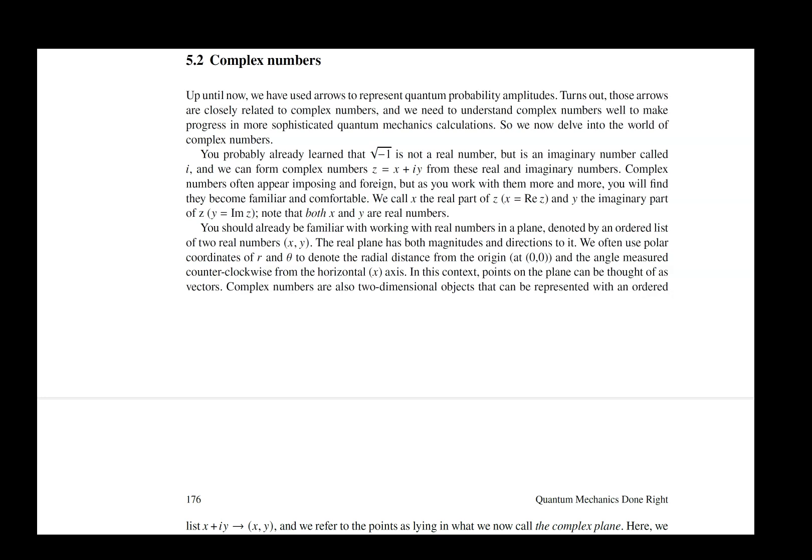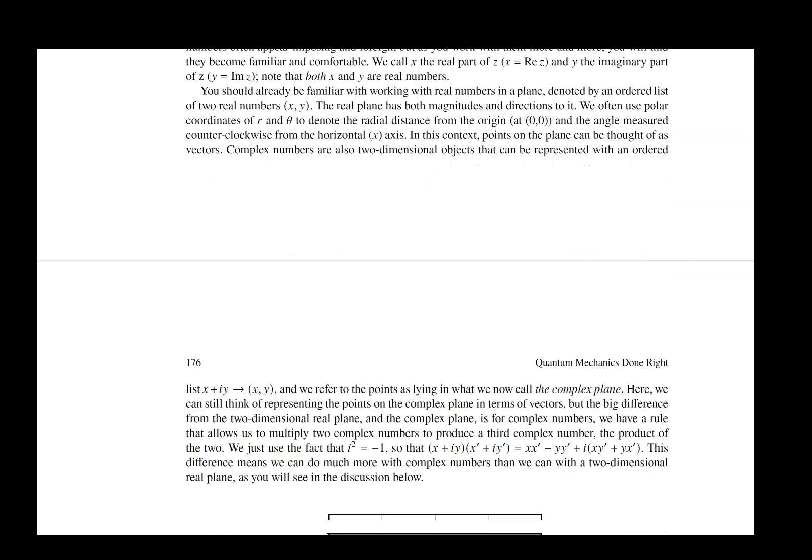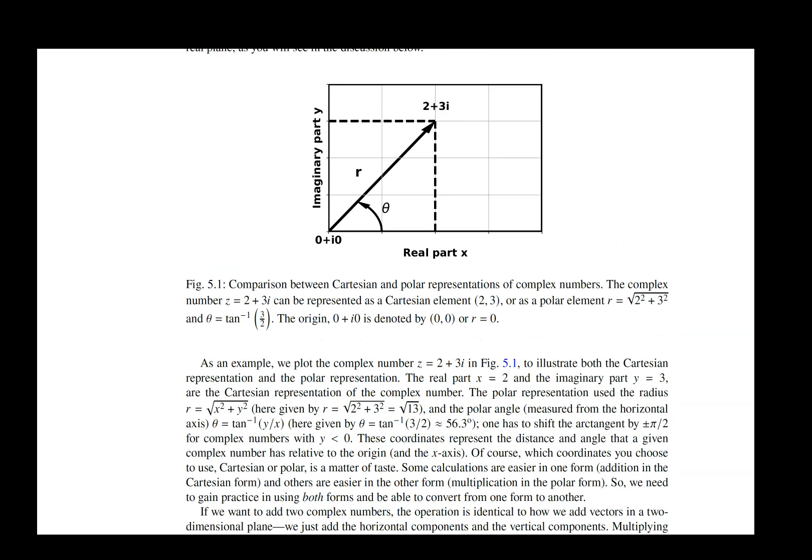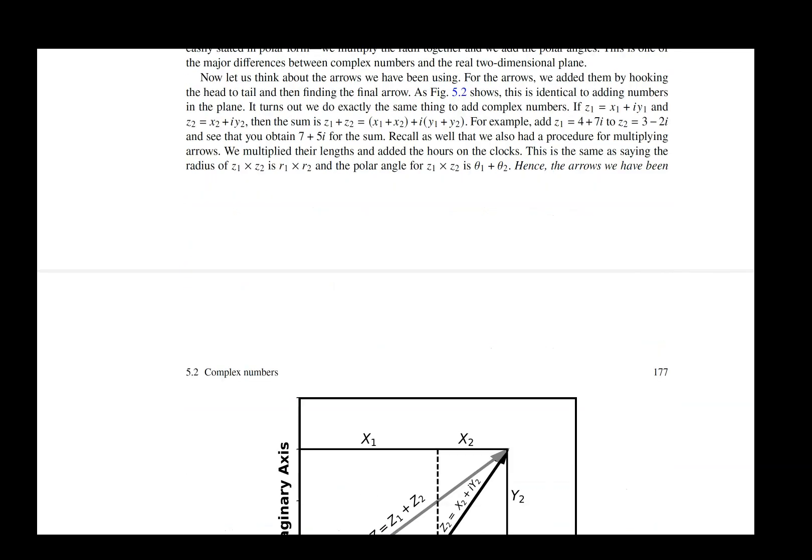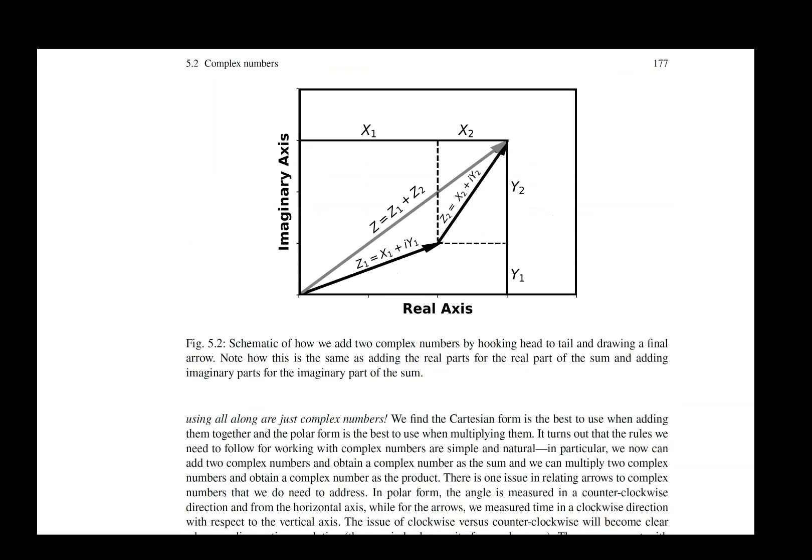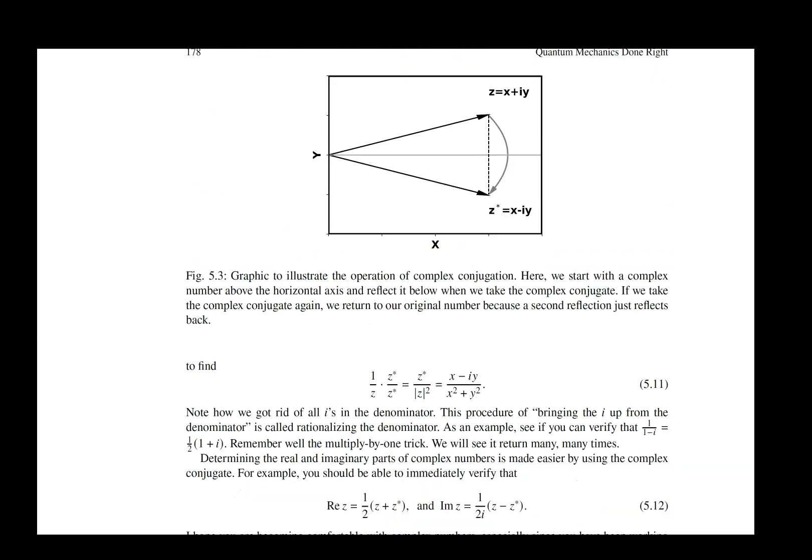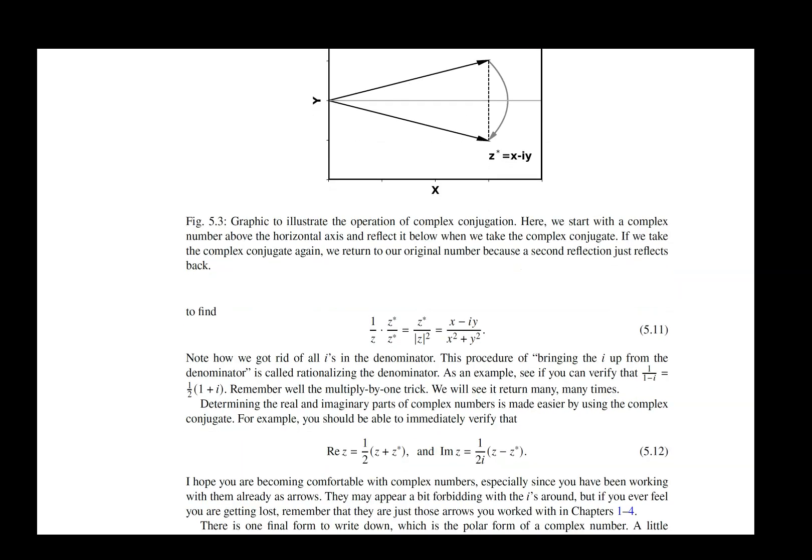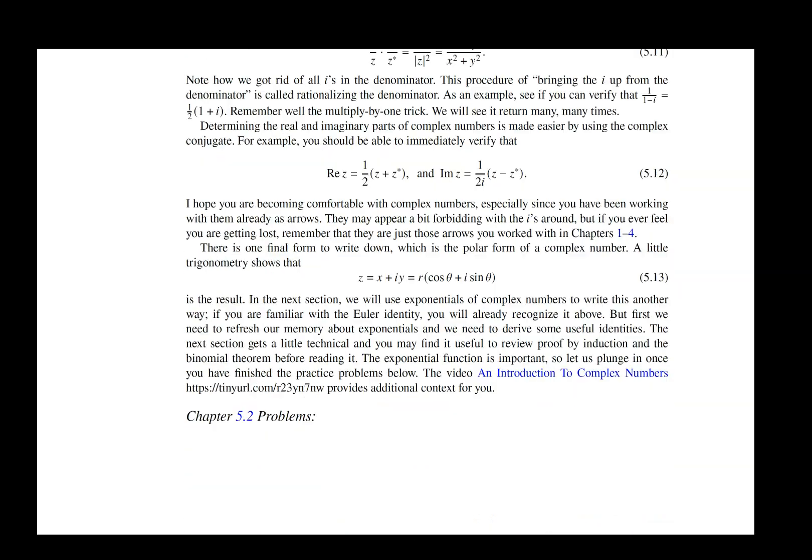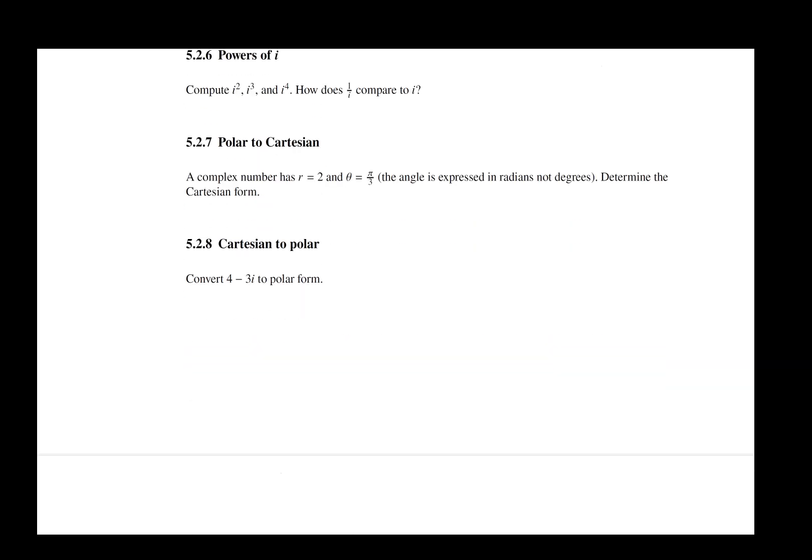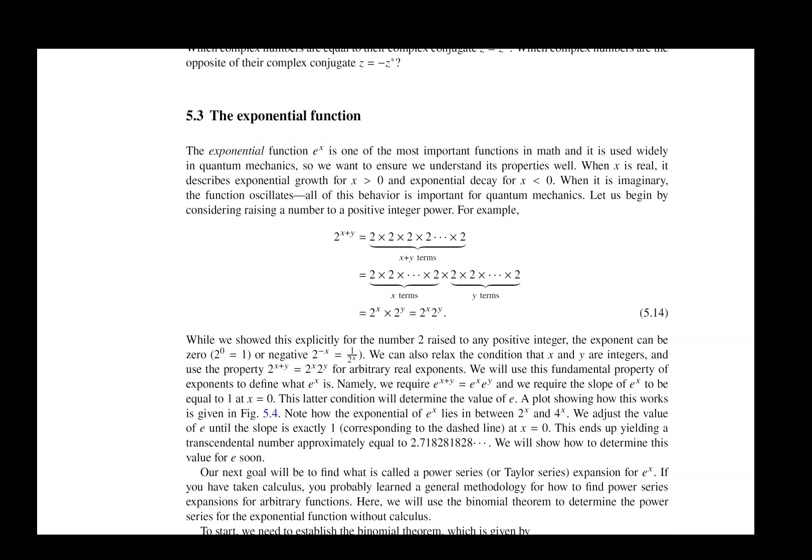Then we move on to complex numbers. Complex numbers are very important in quantum mechanics because you can't really do anything in quantum mechanics without complex numbers. They can be represented both in a Cartesian representation and in a polar representation. And you need to be able to go between the two. We discuss how you can add two together. We discuss how you can multiply them. We discuss the complex conjugate which is just a reflection about the x-axis. And we, of course, have problems.